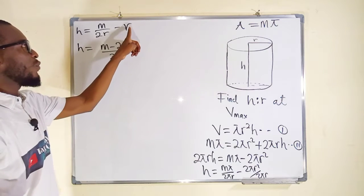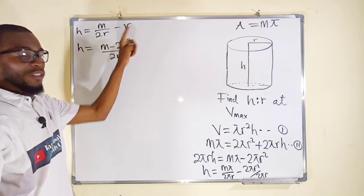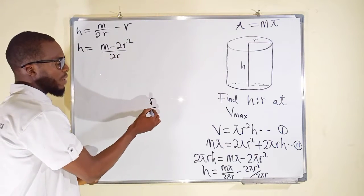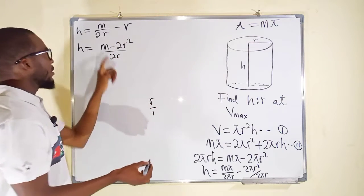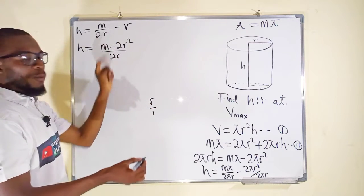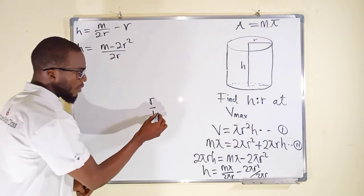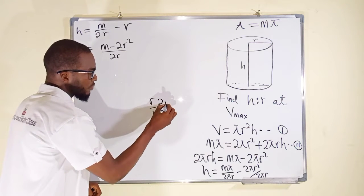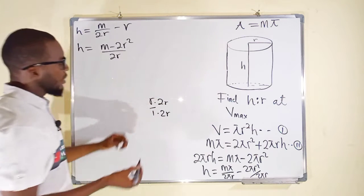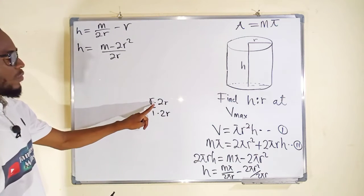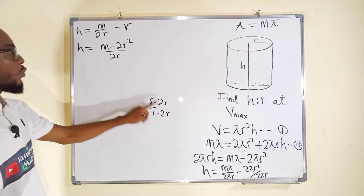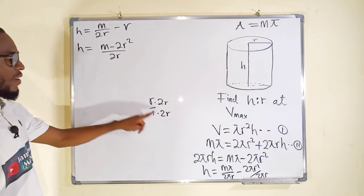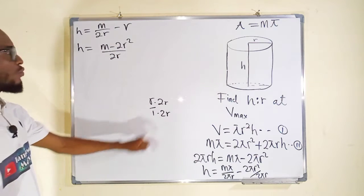To rationalize this expression, note that r divided by 1 can be written with a common denominator by multiplying the top and bottom by 2r. This gives 2r squared, so the combined single fraction form is h equals (M minus 2r squared) divided by 2r.